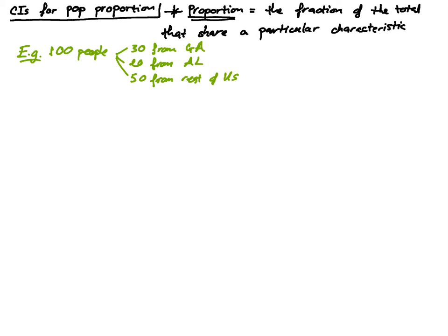From this information I can calculate the proportion of people from Georgia, which is 30 divided by 100 — that gives me 0.3. The proportion of people from Alabama is 20 divided by 100, which gives me 0.2.